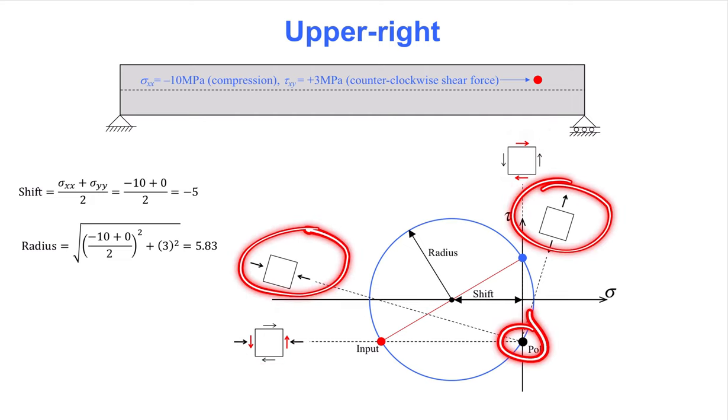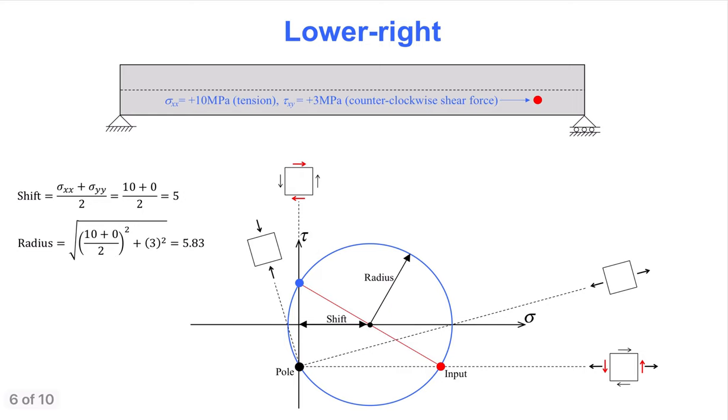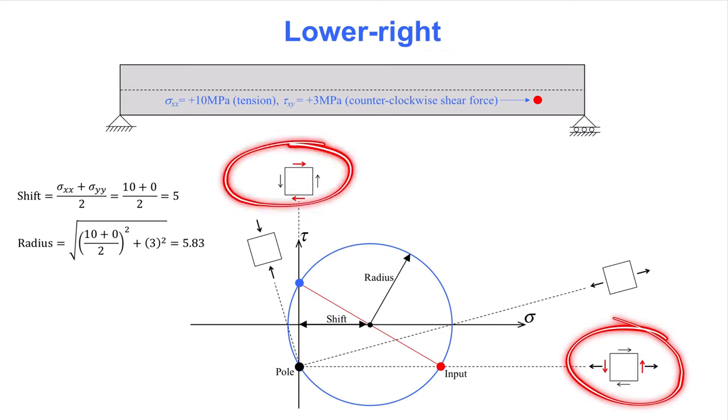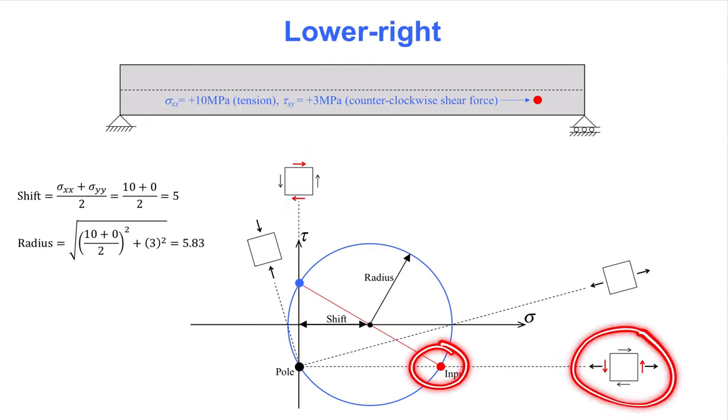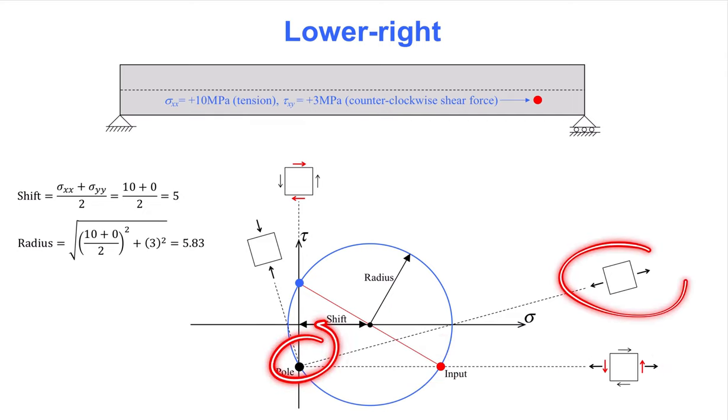The next slide examines the stress state in the lower right side of the beam. The axial stress sigma-xx is positive, as is the shear stress. Again, the positive shear stress is manifested in the small red arrows that appear here and here. The red point is below zero because these small red arrows are counterclockwise for the positive shear stress. The pole point and the principal stresses are also identified in this slide.